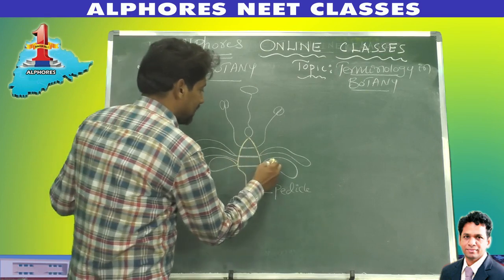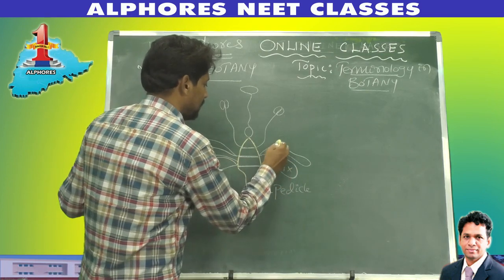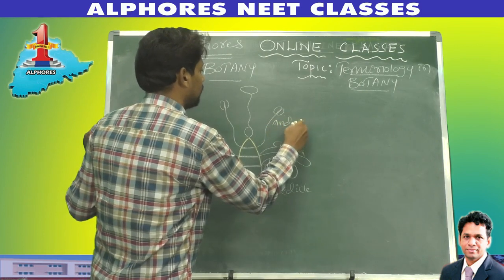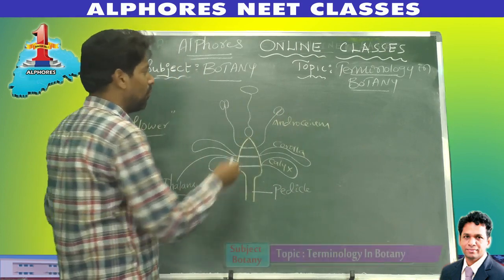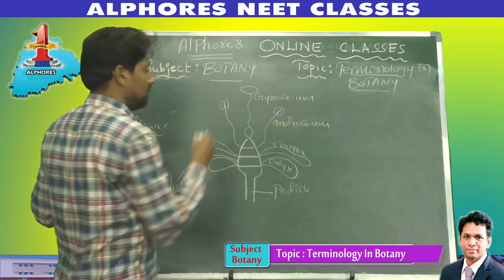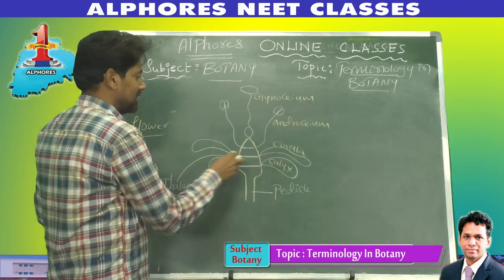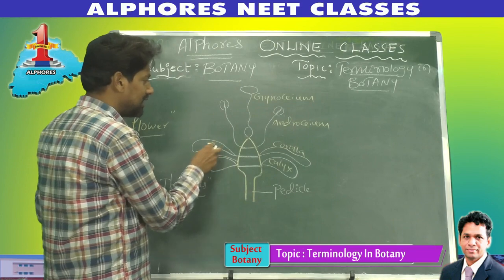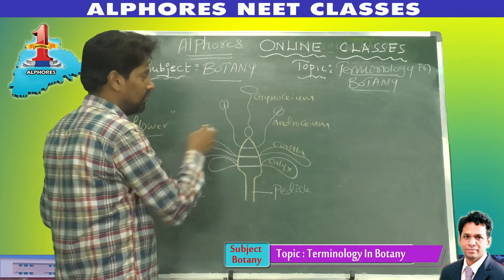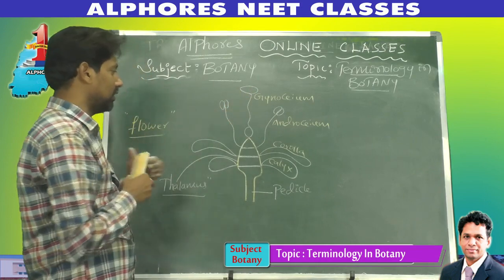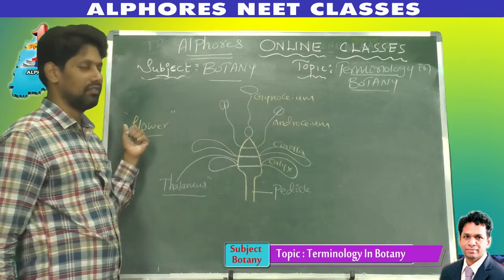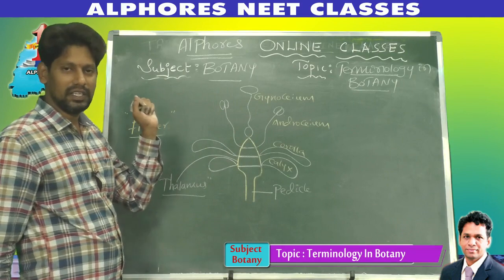A flower contains four parts: number one, calyx; number two, corolla; number three, androecium; number four, gynoecium. These are the four parts of a flower.